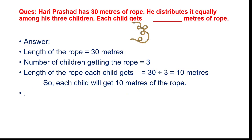Next question. Hari Prasad has thirty metres of rope and he distributes it equally among his three children. Each child gets how many metres of rope? What you will do is divide thirty metres by three. You will get ten metres as the answer.